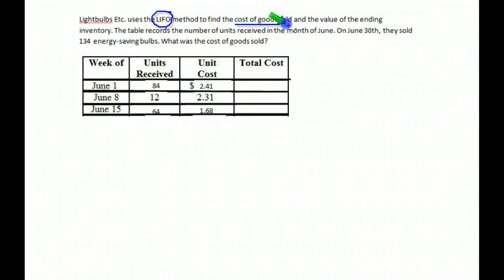They want the final cost of goods sold. So we want the ones and the value of the ending inventory. The table records the number of units received in the month of June. On June 30th, they had sold 134 bulbs. What's the cost of goods sold? So they've ordered all of these. Again, let's find the total. We get 160 units received.